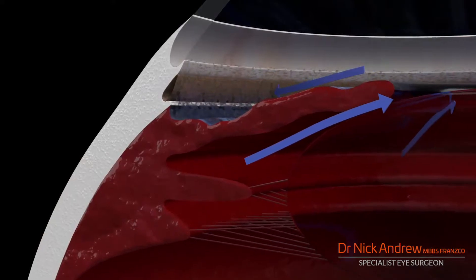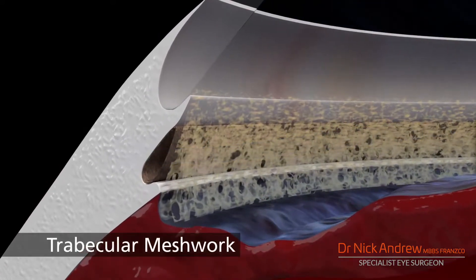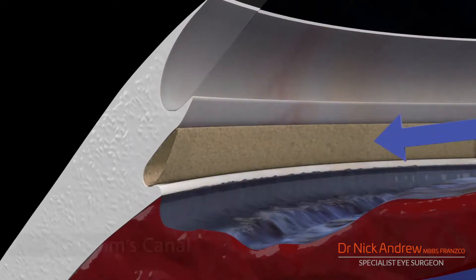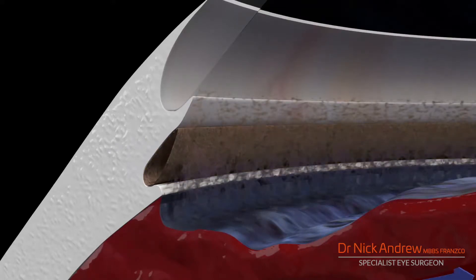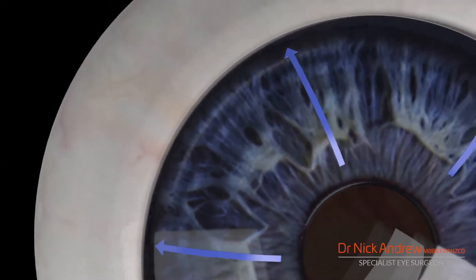After passing through the pupil, fluid flows through a multi-layered sheet of cells called the trabecular meshwork. This covers the drainage channel of the eye, Schlem's canal. From Schlem's canal, fluid drains into collector channels that connect with the tiny blood vessels of the conjunctiva and episclerae.